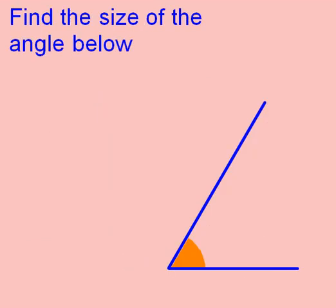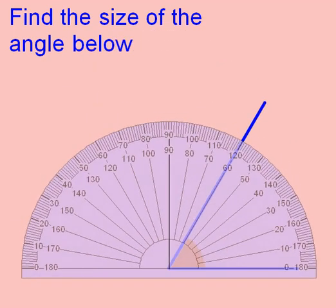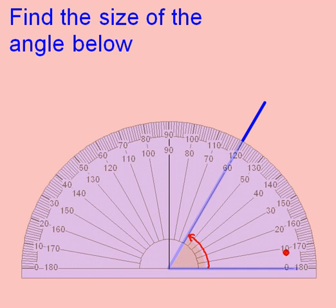I want to measure the size of this angle. First of all, I need my protractor and I need to move it into position over the angle. I line the baseline up carefully with the line at the bottom of the angle. The centre mark of the protractor needs to be exactly on the point of the angle. I want to use the scale that starts at zero, so I'm going to use the inside scale. I can see that it goes around to exactly 60 degrees — so the size of my angle is 60 degrees.